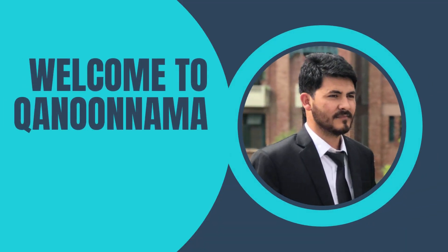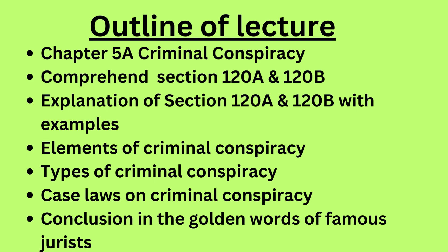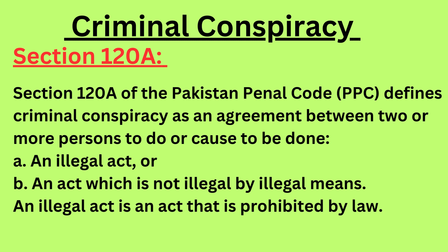Assalamu alaikum and welcome to Kanun Nama. In today's video lecture we are going to start chapter number 5A which is about criminal conspiracy. In this chapter we will comprehend sections 120A and 120B, explain them with examples, then cover elements of conspiracy, types of criminal conspiracy, case laws, and conclude with the golden words of famous jurists. So without wasting time, let's start with section 120A.